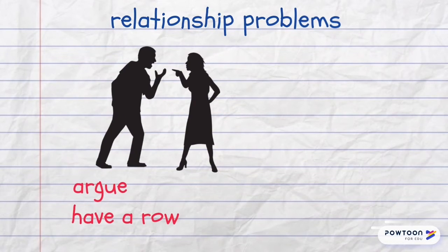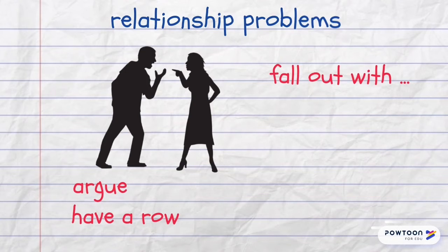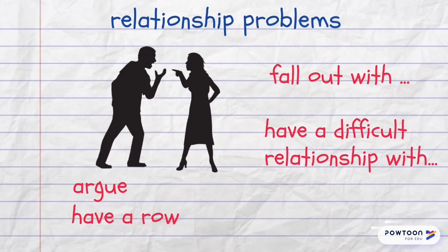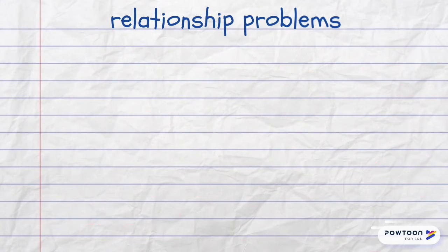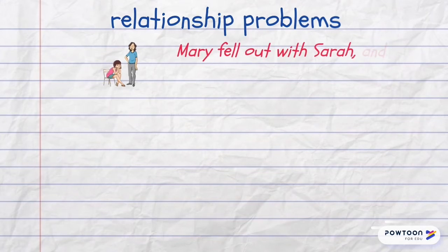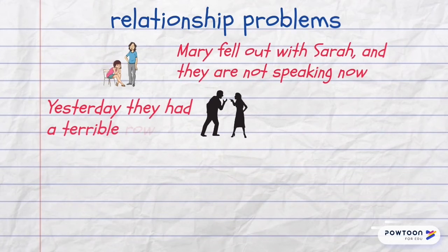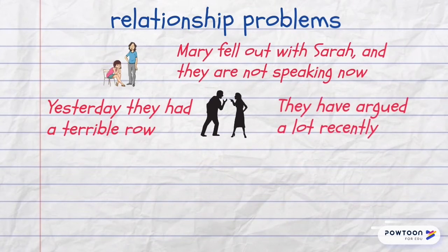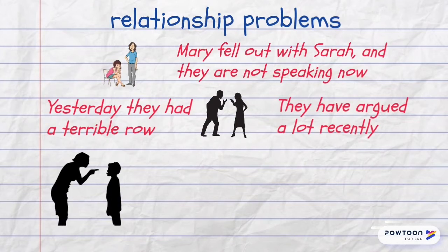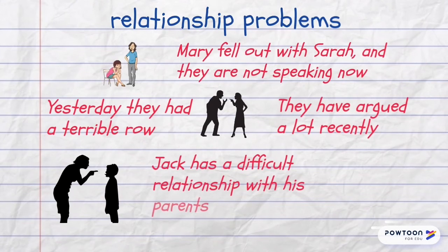People often experience relationship problems. They argue or have a row with each other, fall out with each other, or you can say they have a difficult relationship with each other. For example: Mary fell out with Sarah and they are not speaking now. Yesterday they had a terrible row. They have argued a lot recently. Jack has a difficult relationship with his parents.